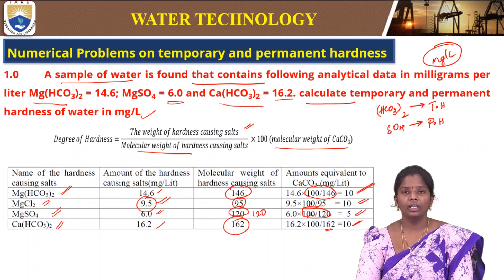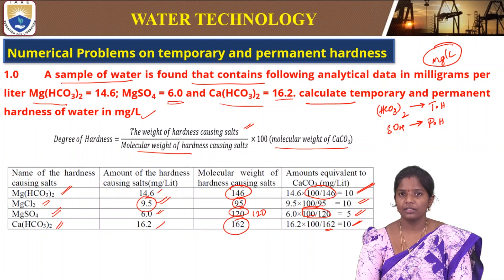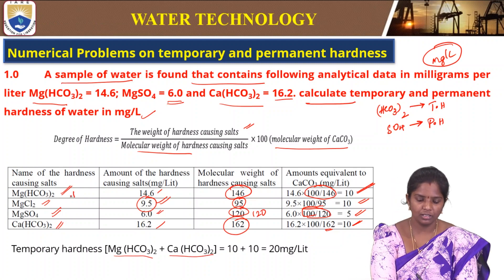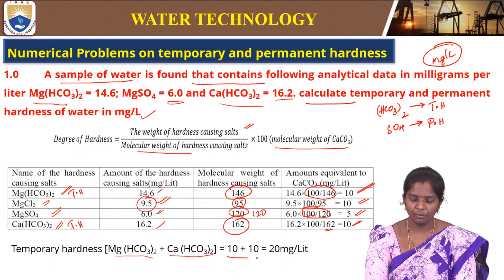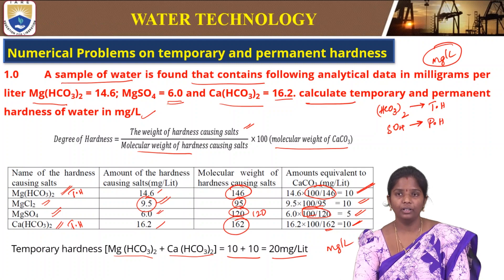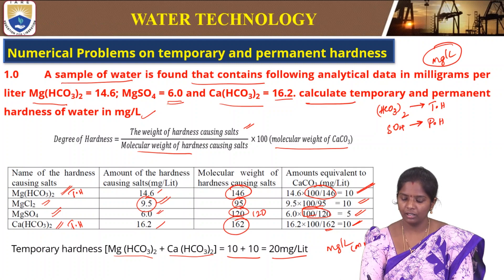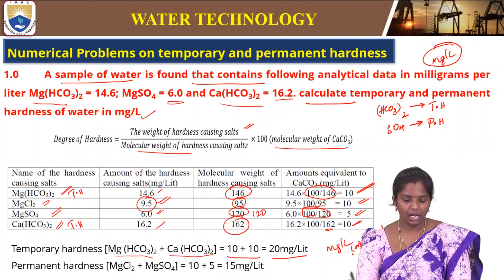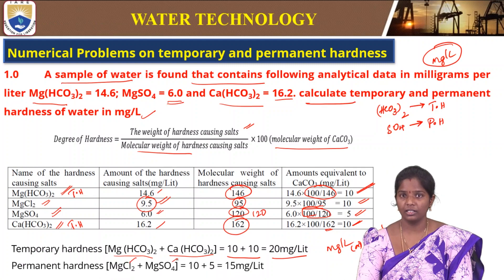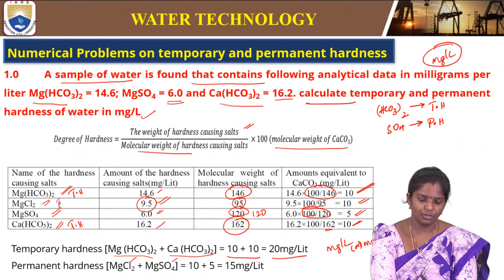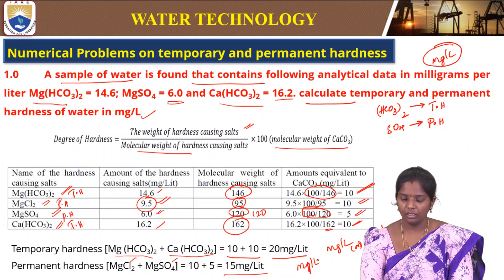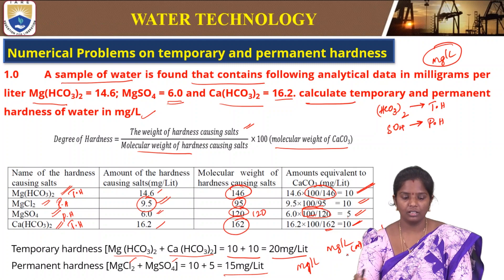Now we calculate temporary and permanent hardness. Bicarbonate salts cause temporary hardness — magnesium bicarbonate and calcium bicarbonate — so 10 + 10 = 20 mg/L temporary hardness. Permanent hardness is due to chlorides and sulphates, so 10 + 5 = 15 mg/L permanent hardness. These are the hardness concentrations present in that particular water sample.